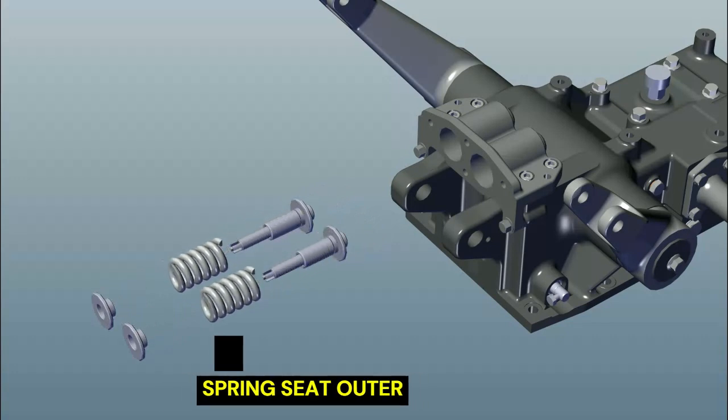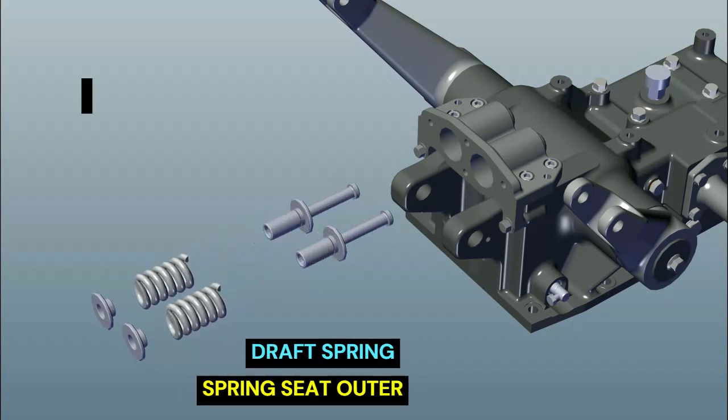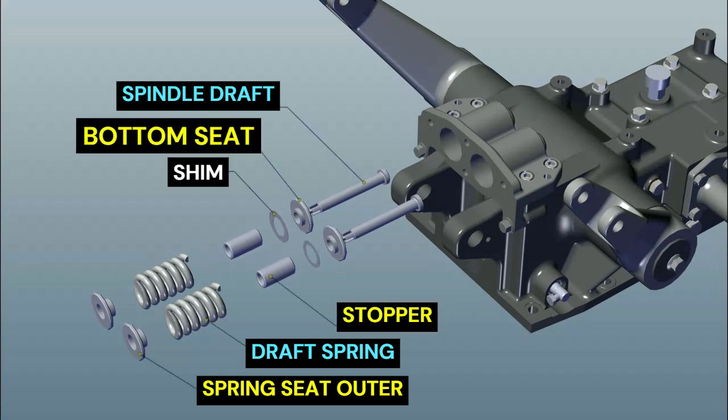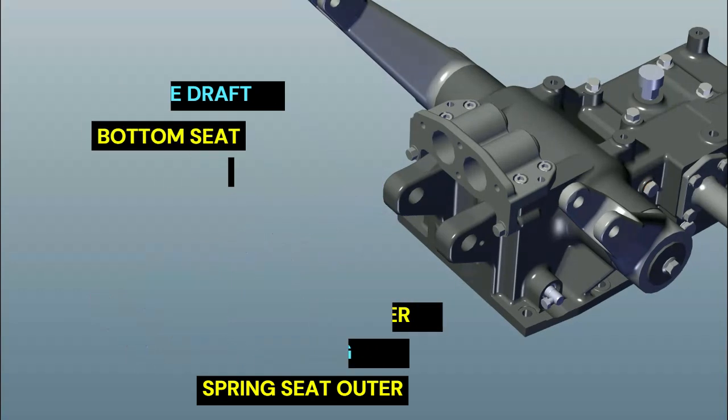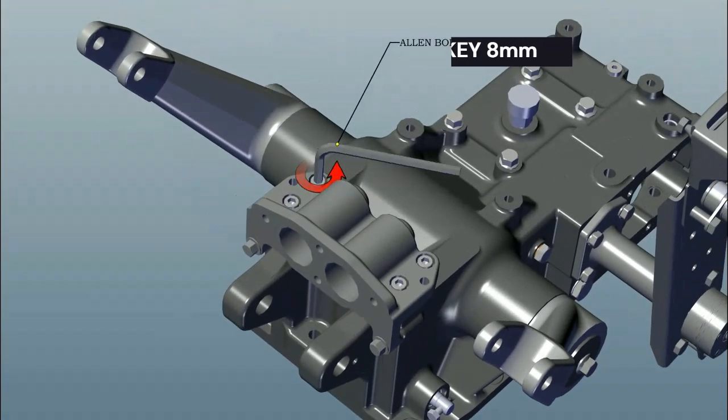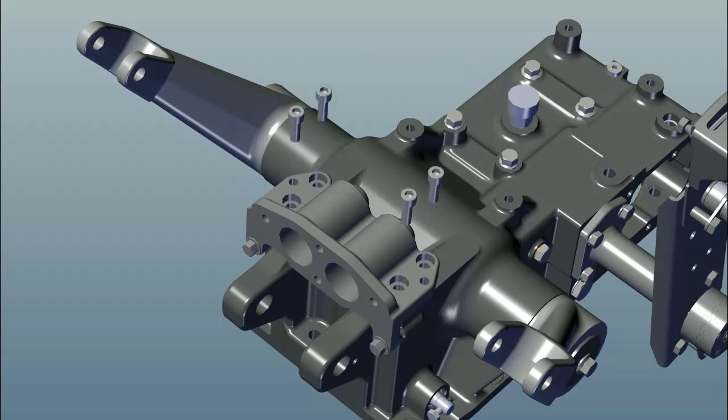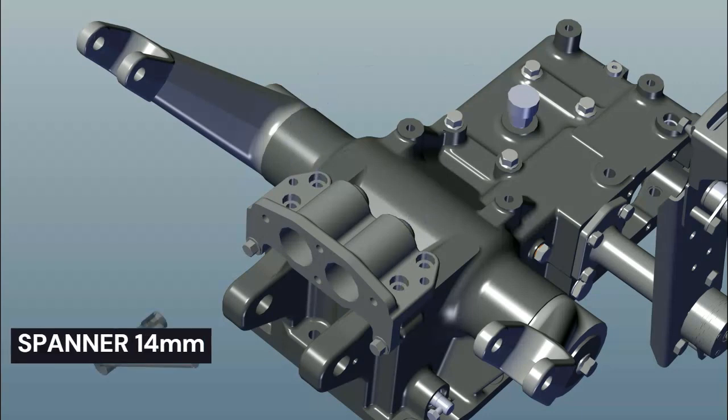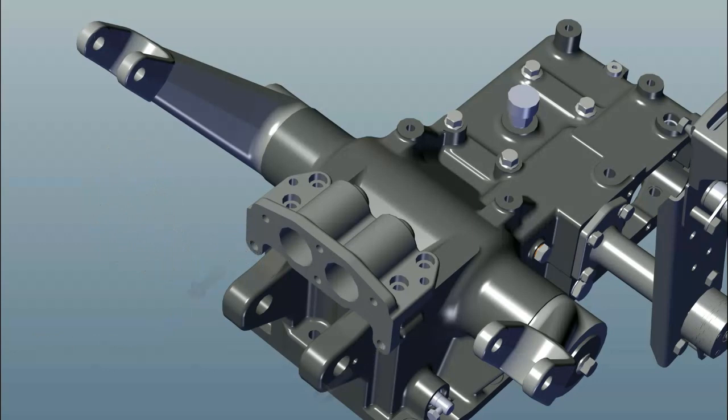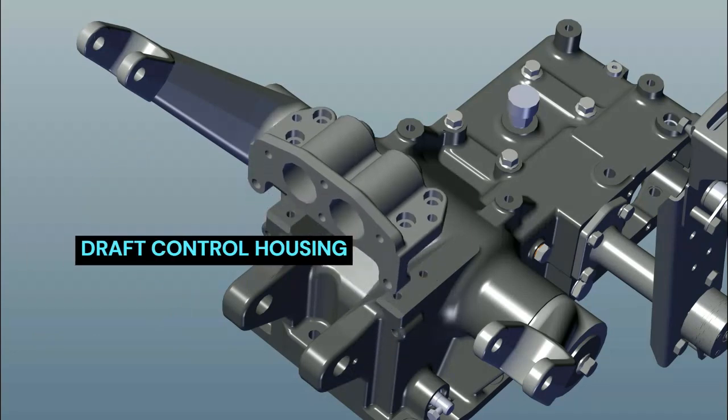Remove cotter pin, spring, and spindle draft. Remove cotter pin, spring stopper, and bottom seat. Remove 4 numbers M10 Allen bolt. Remove 2 numbers M10 bolts, cotter pin, and draft control housing.